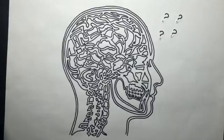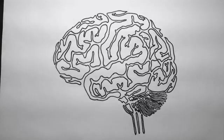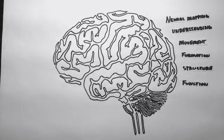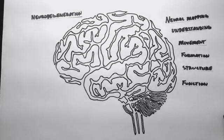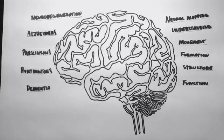So what does optogenetics mean for neuroscience? Researchers believe that optogenetics can lead us to a better understanding of the central nervous system's movement, formation, structure, and functions, along with having better understanding of, and potential solutions to, neurodegenerative conditions like Alzheimer's, Parkinson's, Huntington's, and various forms of dementia.